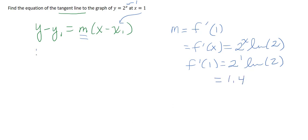So I just start plugging everything in. So y minus 2 to the first power, because that's that function evaluated at 1, equals 1.4 times x minus 1, because that's that value.